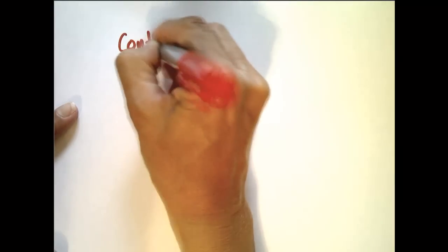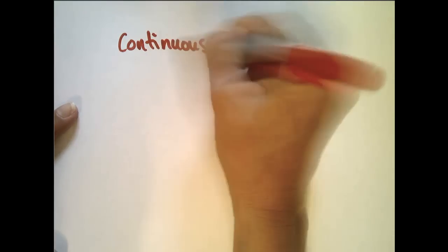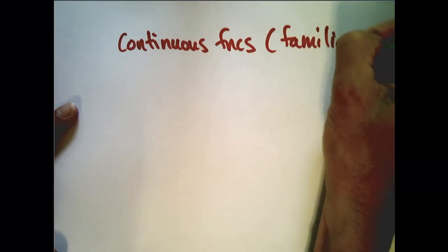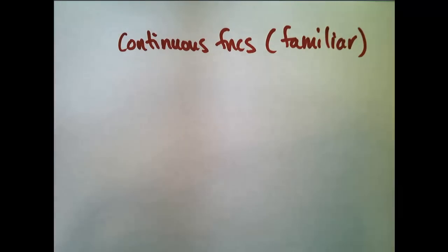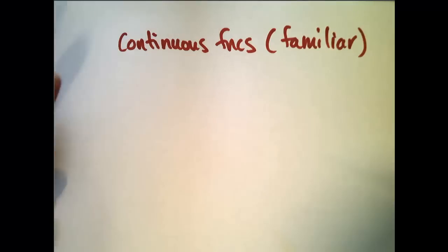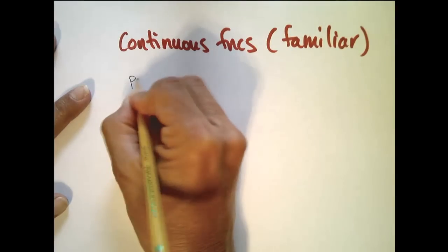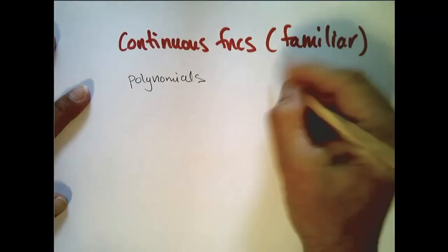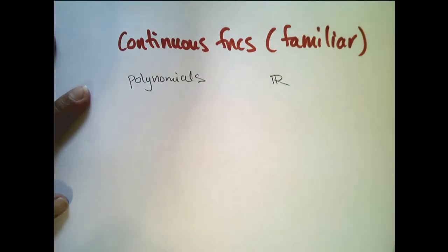Now, let's list a few of our common and familiar functions. Here's some continuous functions we know. Some familiar ones. Polynomials. I'm going to change to a not such a fat pen. So, polynomials are continuous on the whole real number line, so everywhere.